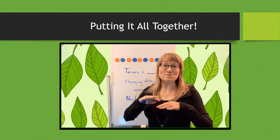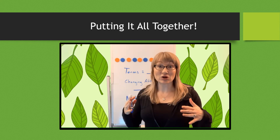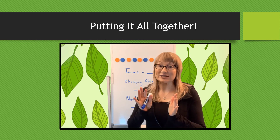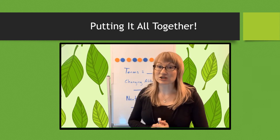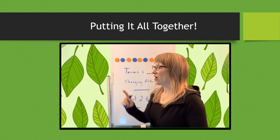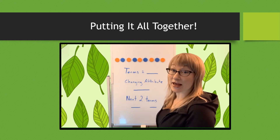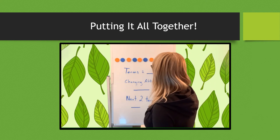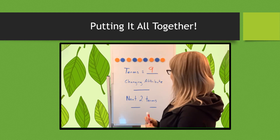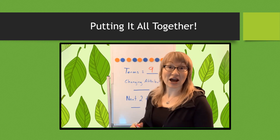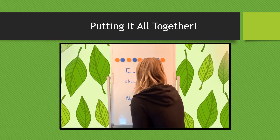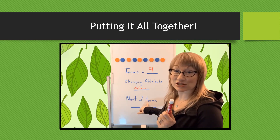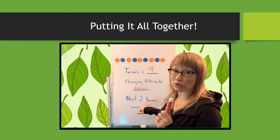Welcome back. Now it's time to mix it all up and have some fun. We're going to take all the knowledge we've learned about attributes, terms, and cores, and identify it all for this pattern — then take it a step further and figure out what the next two terms are. First, let's count the number of terms: one, two, three, four, five, six, seven, eight, nine. So in this pattern I have nine terms. What is changing? Obviously the color is changing, so here we write color. Now let's figure out what the core is — I'm going to circle my core.